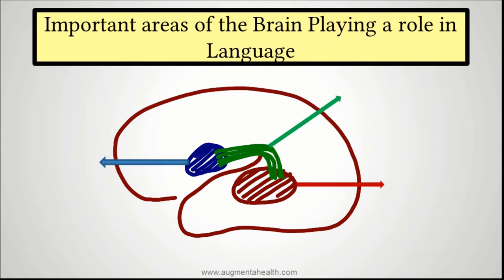Just to understand whether you have got the concept, can you try to recall what the blue line, green line, and the red line identify? Which of the areas and what do they do? I hope you got the things correctly.